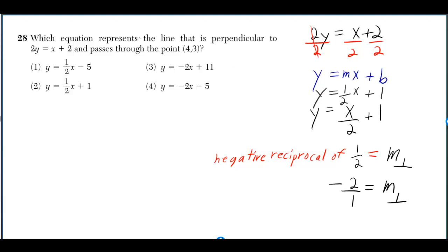But we want the equation that represents the line that's perpendicular to this line. Perpendicular lines have negative reciprocal slopes. So the slope of the perpendicular line is the negative reciprocal of 1 over 2.